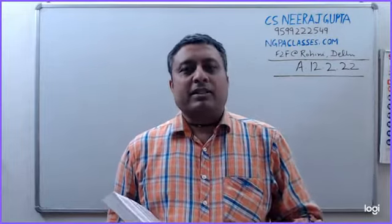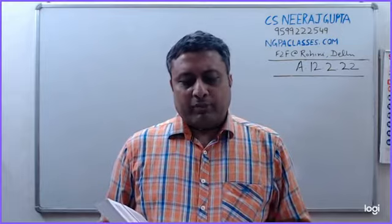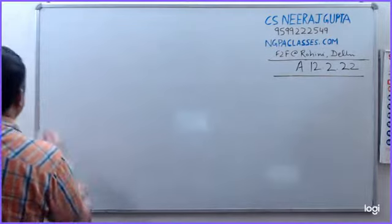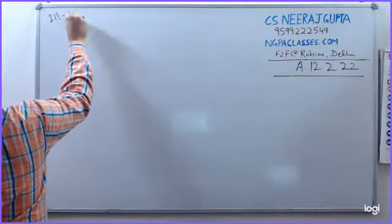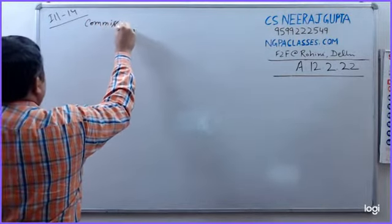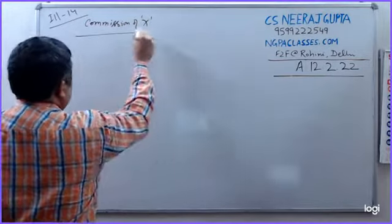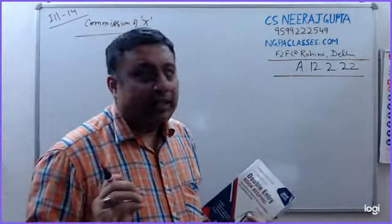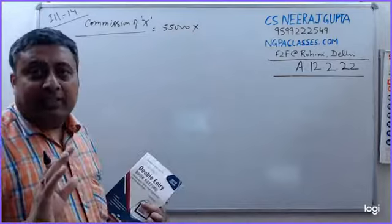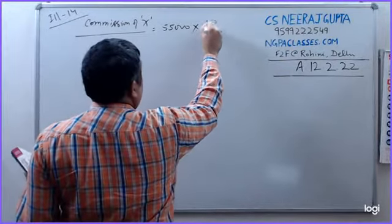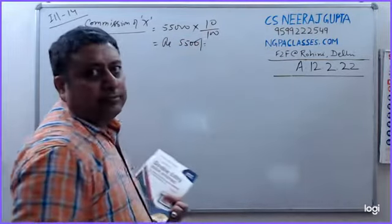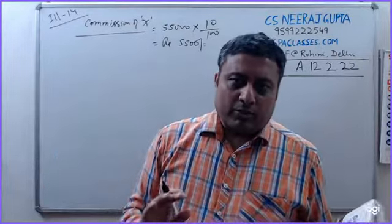So Y's formula applies. 55,000 is our net profit. For X's commission: 10 by 100, it is coming to rupees 5,500. 55,000 times 10 percent.